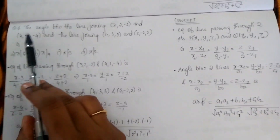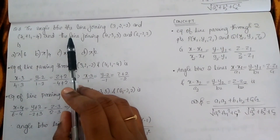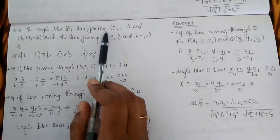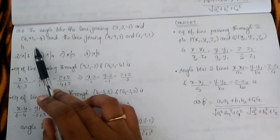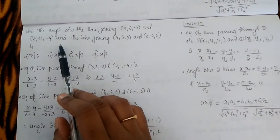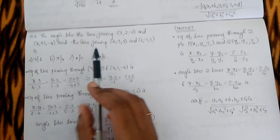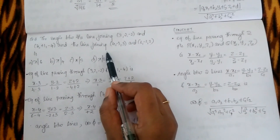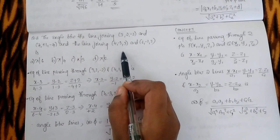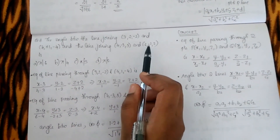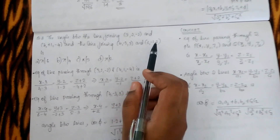The next question: the angle between the line joining (3, 2, −2) and (4, 1, −4), and the line joining (4, −3, 3) and (6, −2, 2).